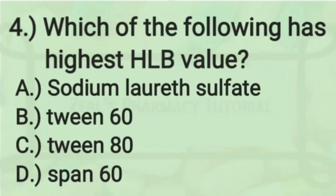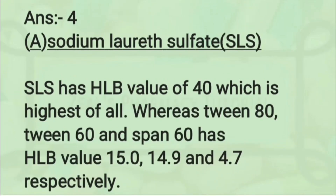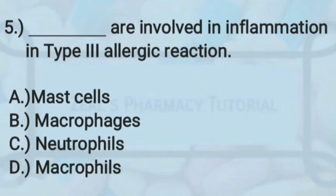The fourth question is: which of the following has the highest HLB value — Sodium Lauryl Sulfate, Tween 60, Tween 80, or Span 60? The correct answer is Sodium Lauryl Sulfate (SLS), which has an HLB value of 40, the highest of all. Tween 80, Tween 60, and Span 60 have HLB values of 15, 14.9, and 4.7 respectively.